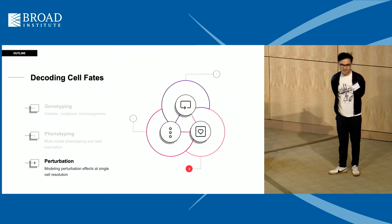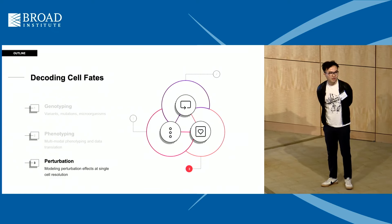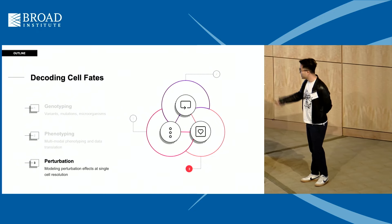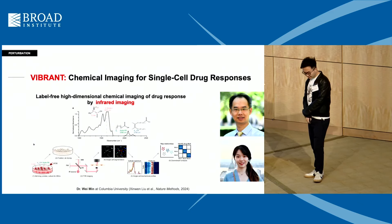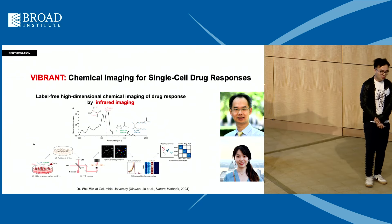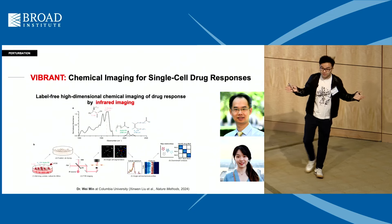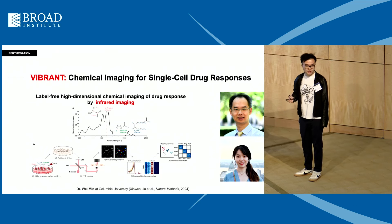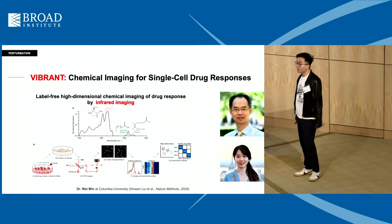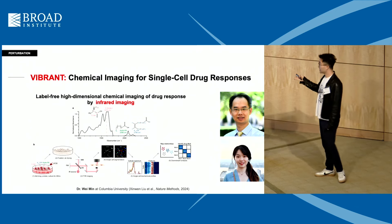That was the main course. For the final five minutes—a dessert—I'll briefly introduce how we add perturbations to these methods. This comes from a wonderful collaboration with Dr. Wei Ming, a professor at Columbia University and inventor of many super cool imaging methods. They published a paper called VIBRANT—the first application using infrared imaging to measure drug responses: you treat cells with different small-molecule drugs and read out cellular phenotypes through infrared imaging.